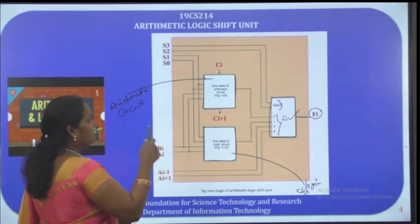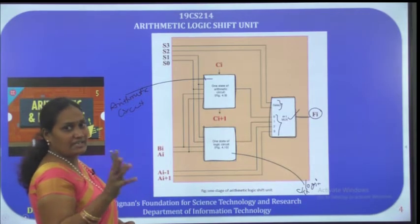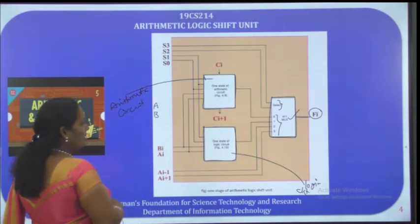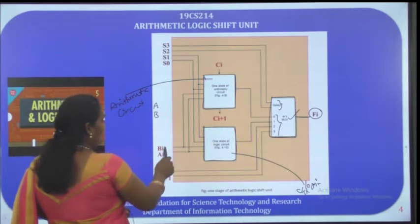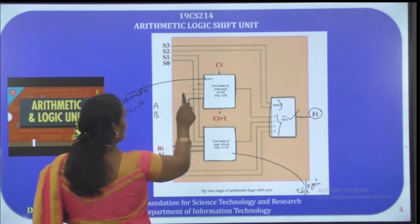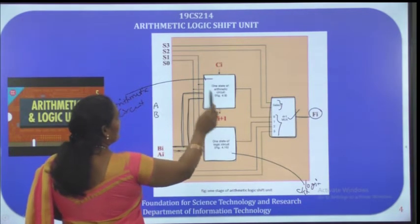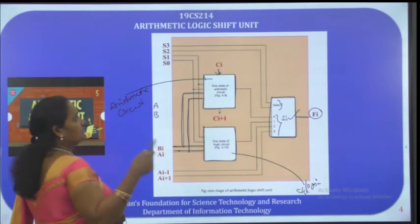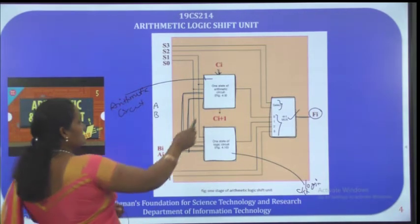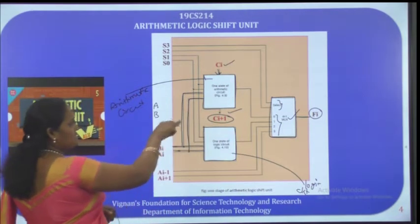For performing arithmetic, logic, or shift operations, we need at most 2 operands, represented as A and B. Both Ai and Bi are connected to the logic circuit as well as the arithmetic circuit. Since the arithmetic circuit can generate carries, the input carry is represented as Ci and the output carry as Ci+1.